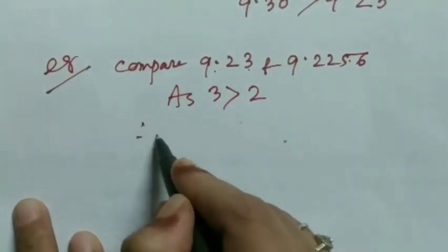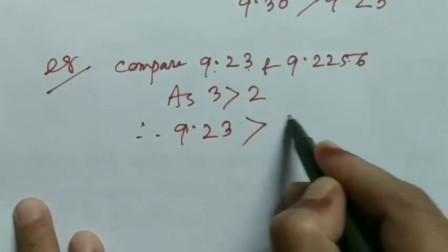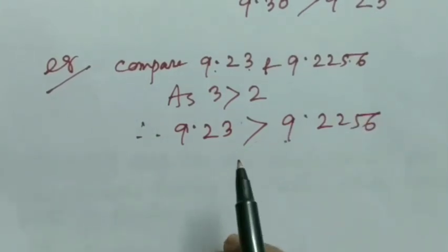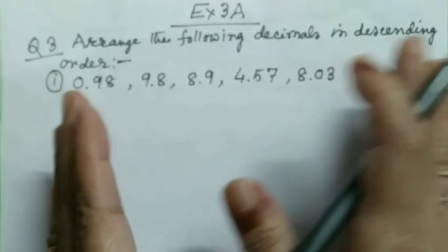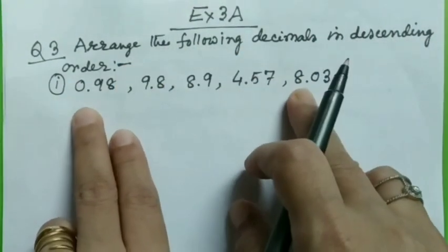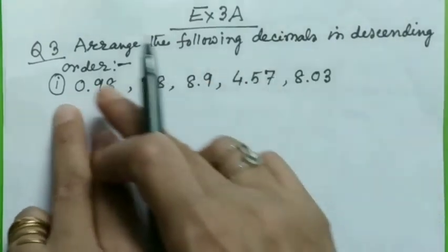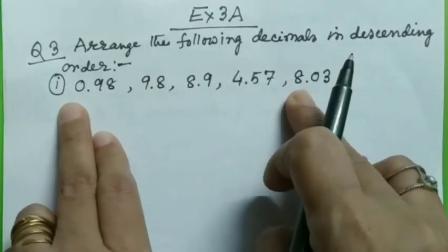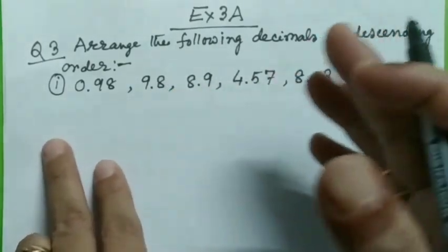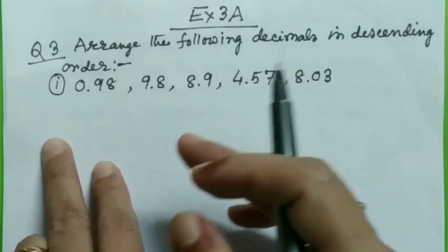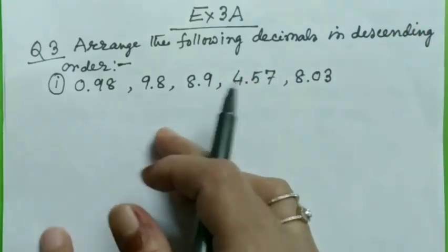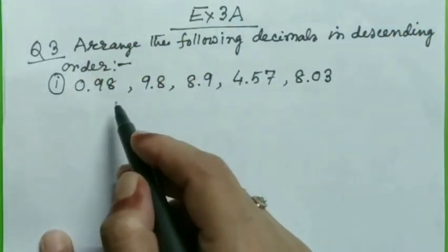For understanding properly, let's take an example: arrange the following decimals in descending order. So if you want to see the numbers, the whole number parts are equal and the numbers are like decimals. So if you want to make like decimals, you can see like decimals? Exactly. And the extreme right side is 08. Ok, let's start.